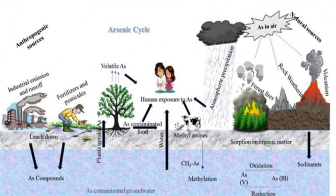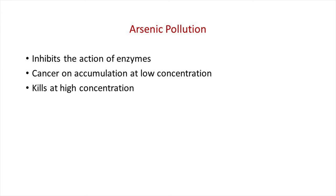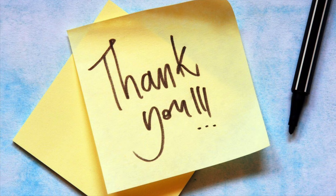Arsenic has two types of sources: natural sources such as forest fires, rock weathering and volcanoes; and anthropogenic (man-made) sources including industrial emissions, runoff, fertilizers and pesticides. Arsenic mainly pollutes water bodies through pesticides, chemical waste and effluents from mining industries. An example of an arsenic pesticide is lead arsenate. Arsenic is highly toxic to all types of organisms — it inhibits the action of enzymes that catalyze cellular reactions, causes cancer on accumulation at lower levels, and kills at high concentrations. Today we discussed water pollution by pesticides, fertilizers and heavy metals. In the next video we will discuss water pollution control measures.